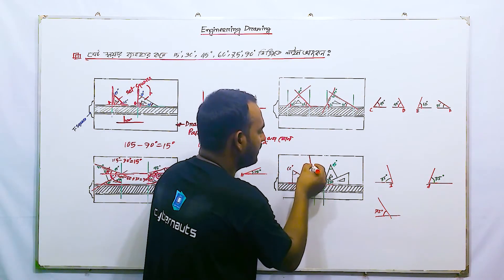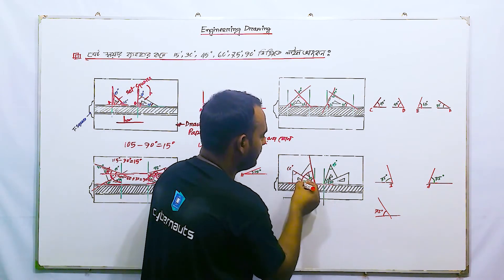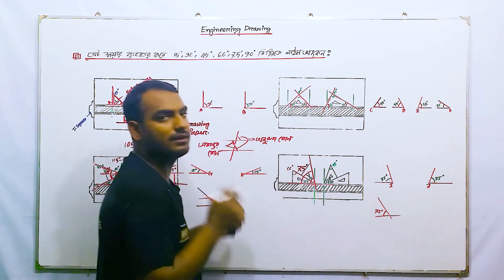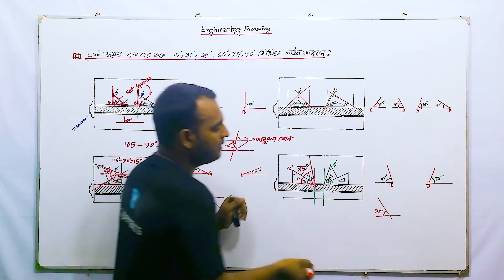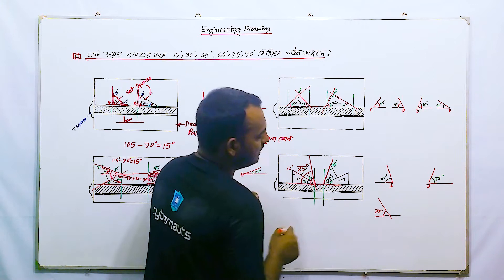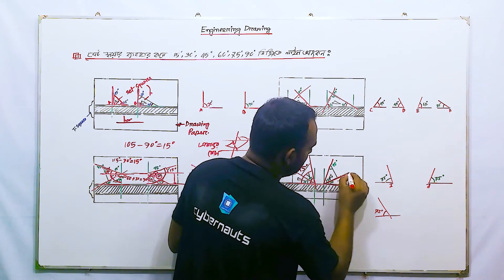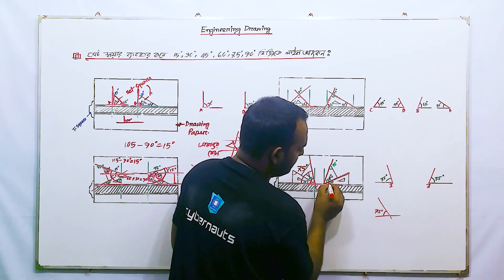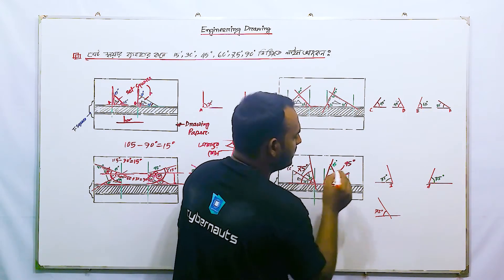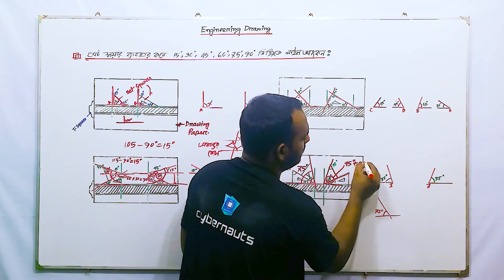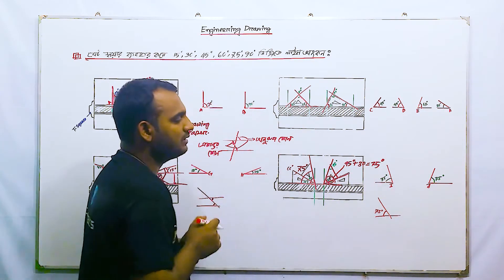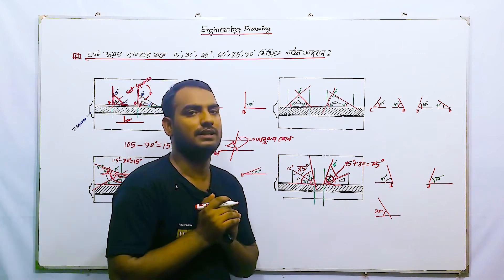Here we have to take a line. 75-degree angle is inclined. The point is that it is a 75-degree angle. This is 30 degree, this is 45 degree. 45 plus 30 equals 75-degree angle. In this angle, we have a 75-degree inclined line draw.